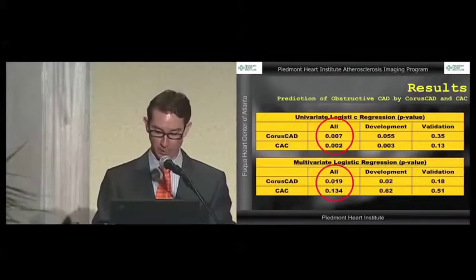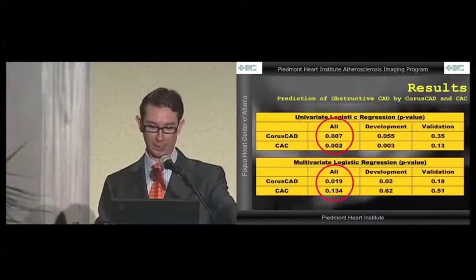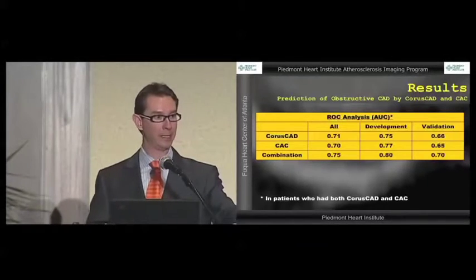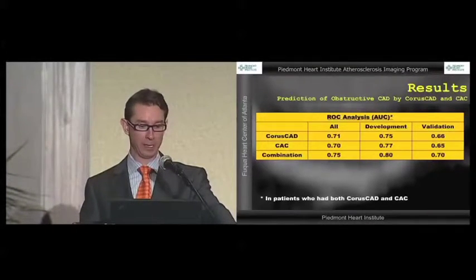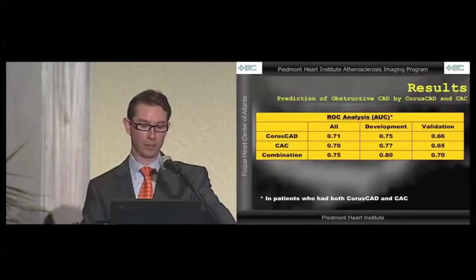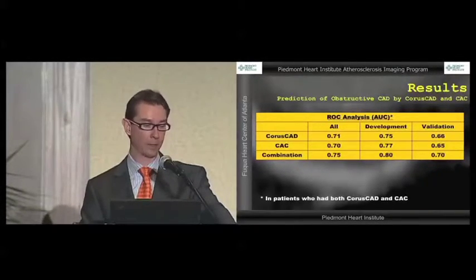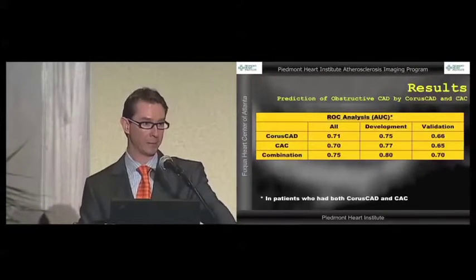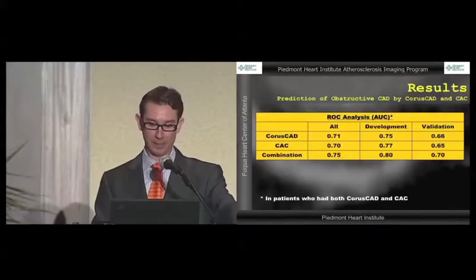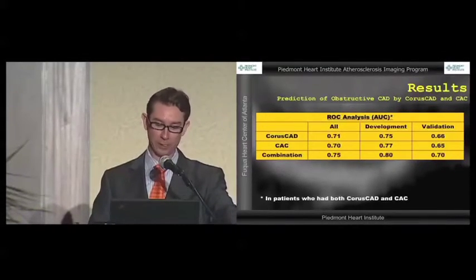Again, it's shown that it does have significant value in predicting this disease. And finally, when we looked at the predictive value of yes or no obstructive disease by QCA, you can see that while each of the tests — Chorus-Cat and calcium score — were independently predictive of obstructive disease, the combination of these two tests was significantly better than either of the components by themselves, showing that combination testing was better. This was looked at in the patients who had both the Chorus-Cat score and calcium score available.